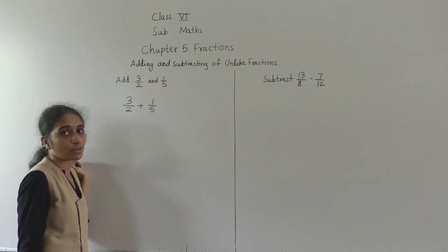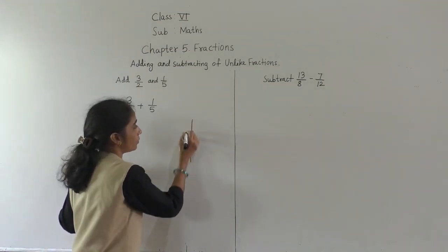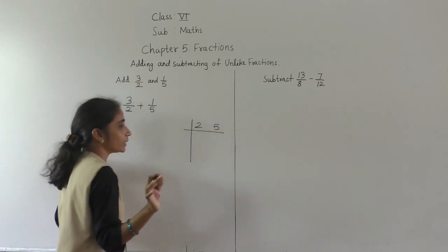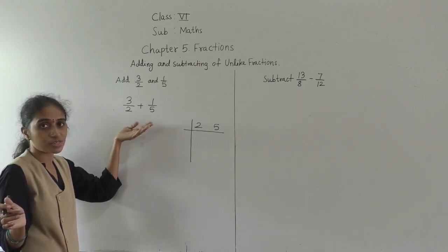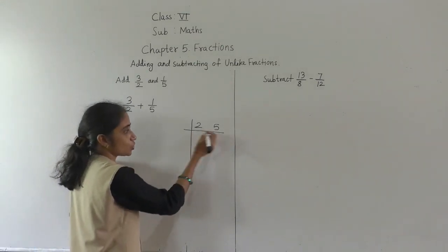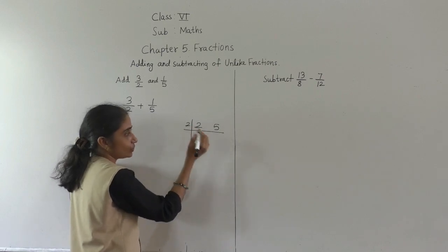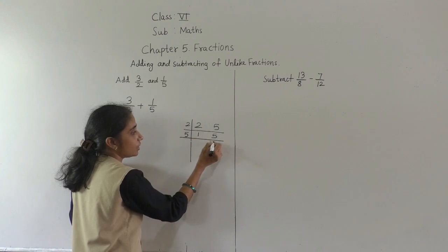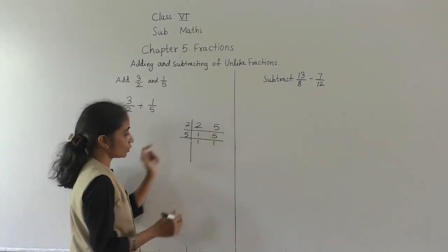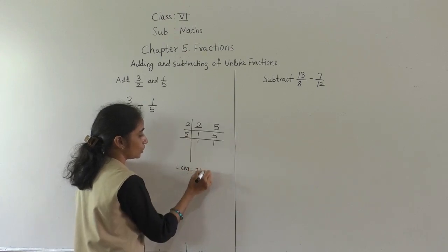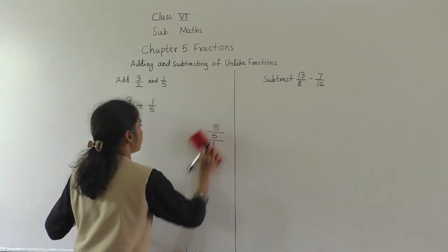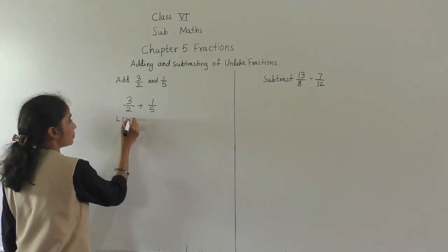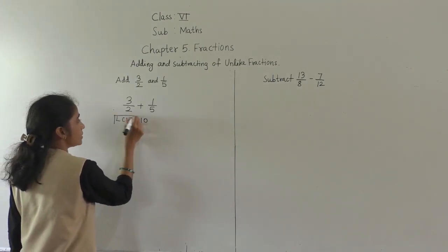Since denominators are different, we need to make them the same by finding the LCM. Find the LCM of 2 and 5. Both are prime numbers, so their product is the LCM. 2 is divisible by 2 — 2 ones are 2; 5 comes down. Then 5 ones are 5. So LCM equals 2 into 5, which is 10.